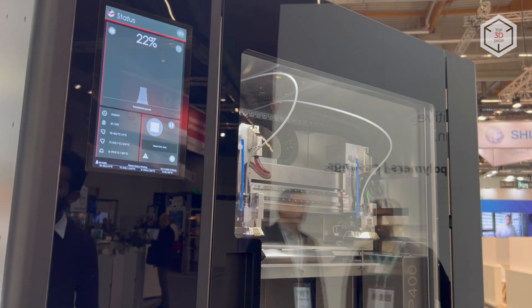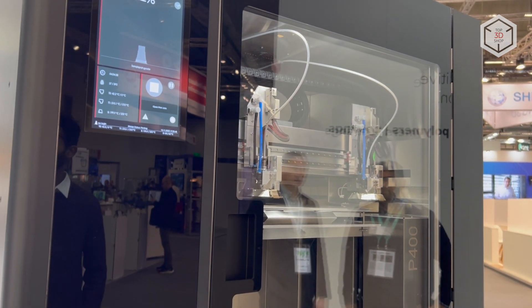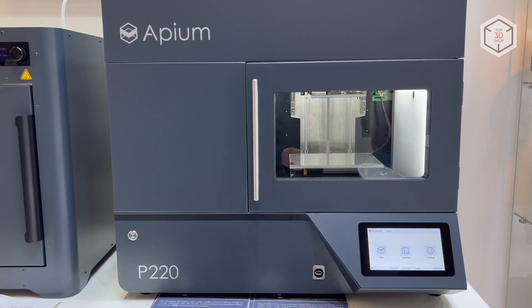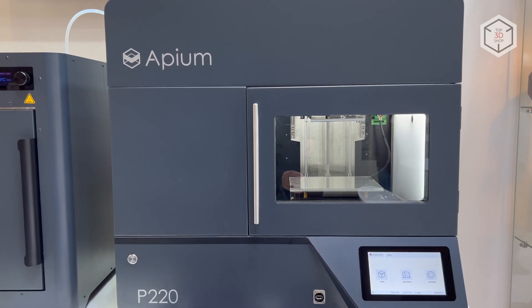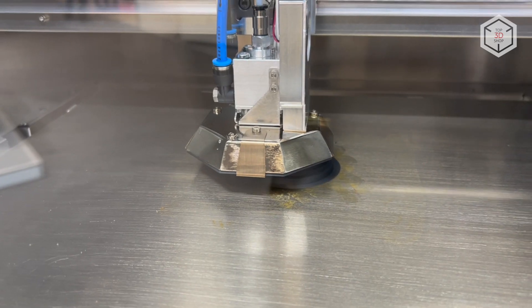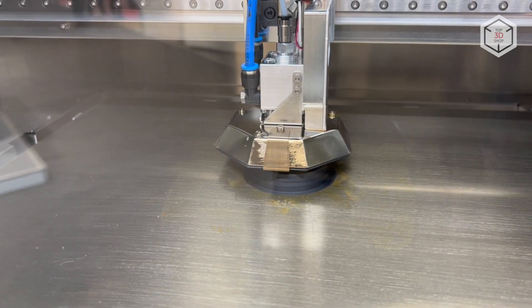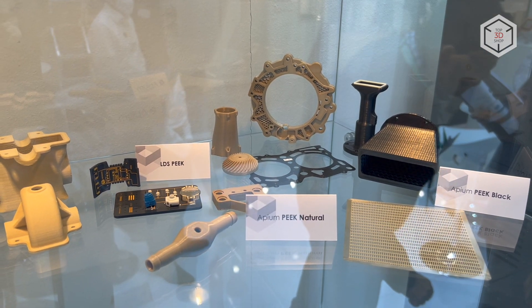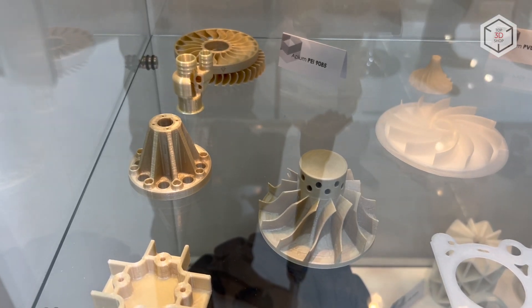The current range of Apium 3D equipment includes three industrial grade models: P220, P400, and M220. All of them are designed for high precision printing with materials such as regular and carbon fiber reinforced PEEK, PEI, and other high temp plastics and composites.